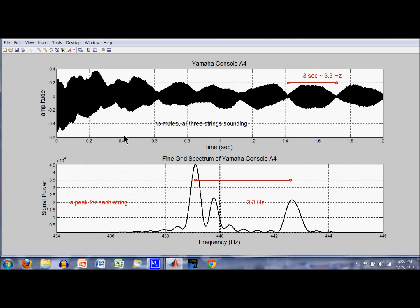The first starting point here was shown by this time trace up here which you can see some beating going on. I'm plotting the amplitude of the wave from striking the A4 note versus time. Down here I'm plotting a fine grid spectrum of that note looking just at the area around 440 hertz, from 434 up to 446 hertz. You can see here's where I want to be, 440.